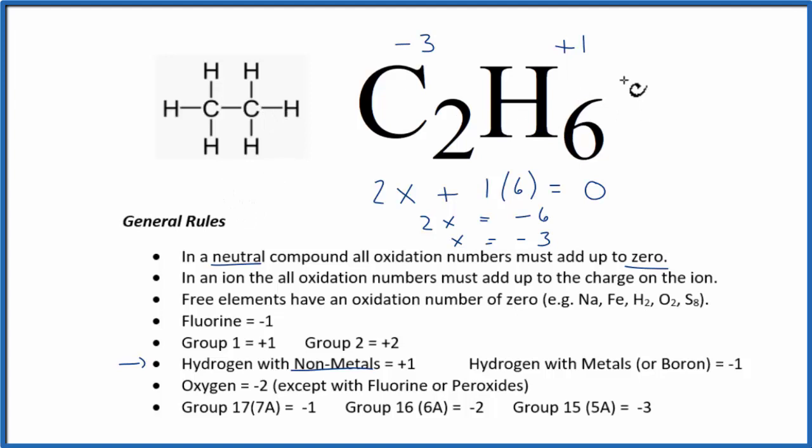But to recap, we found the oxidation numbers for the elements we knew, and used those to find the one that we didn't. This is Dr. B with the oxidation numbers for each element in C2H6 ethane. And thanks for watchin'.